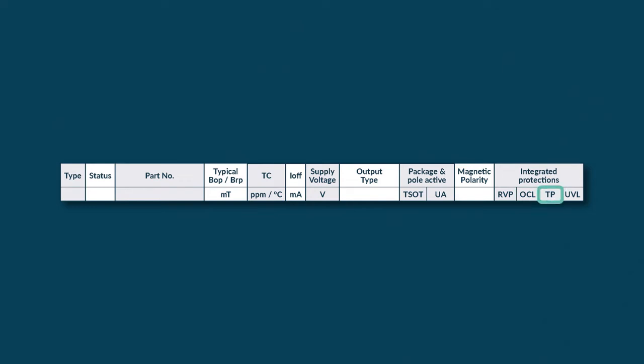TP stands for thermal protection. This will be activated in case of an abnormally high temperature and released when the application is back in normal temperature range. And thanks to the UVL, we avoid unwanted toggling of the sensor under a certain supply voltage.